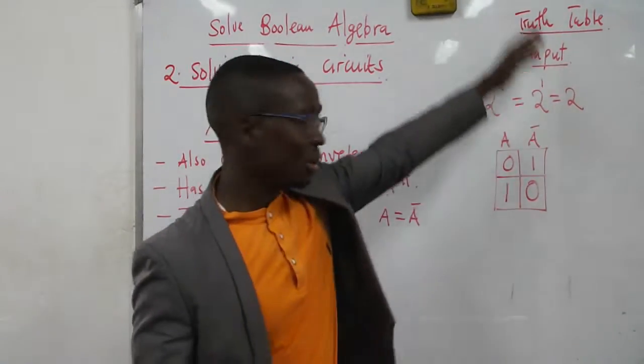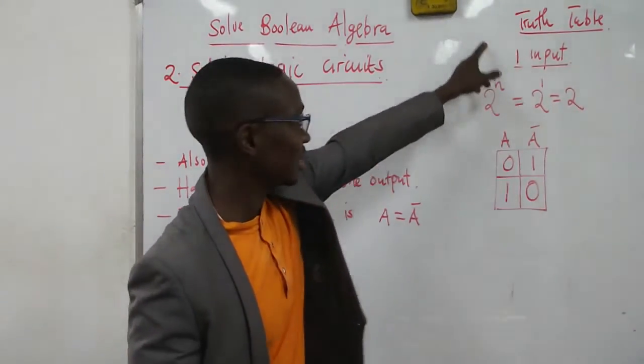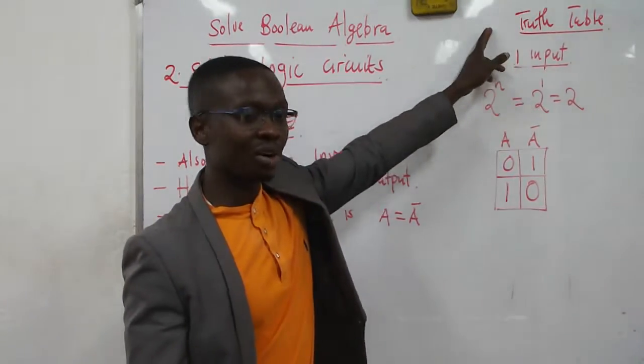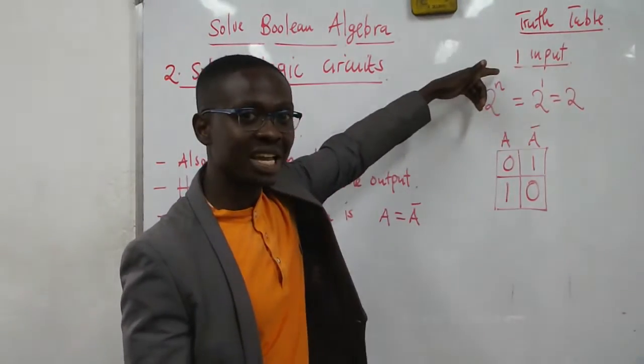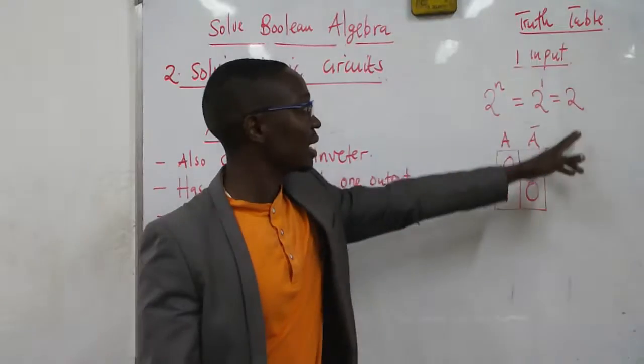The truth table for this one, it is only one input. So for the one input, the number of rows will be given by 2 to the power N, which is 2 to the power 1, and it's going to be 2.